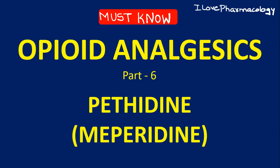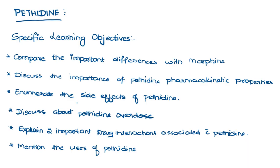Hello dear students, welcome to the class on opioid analgesics. In this class let us learn about pethidine, also known as meperidine. The specific learning objectives are: compare important differences with morphine, discuss pethidine pharmacokinetic properties, enumerate the side effects of pethidine, discuss pethidine overdose, mention the uses of pethidine, and explain the two important drug interactions associated with pethidine.